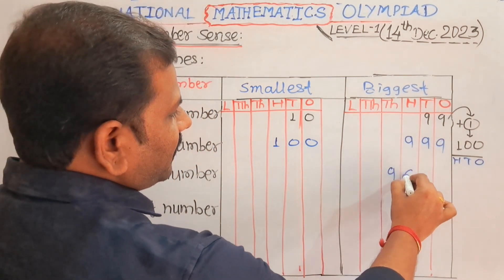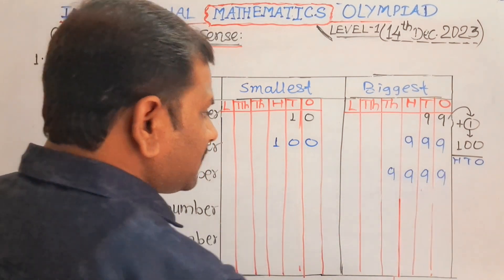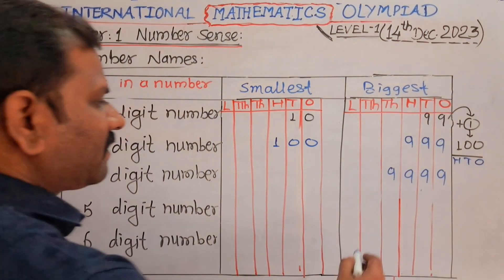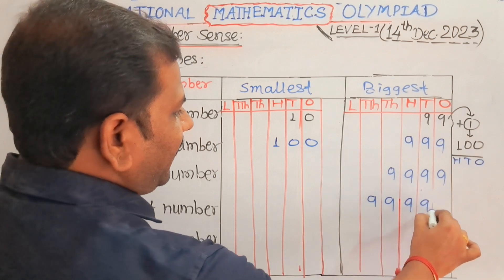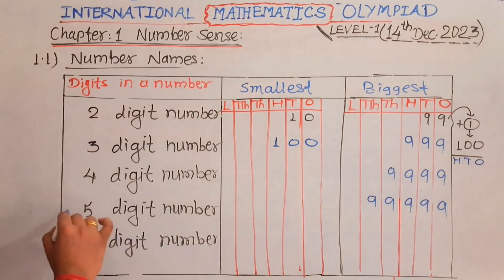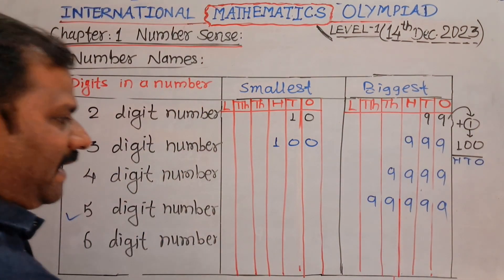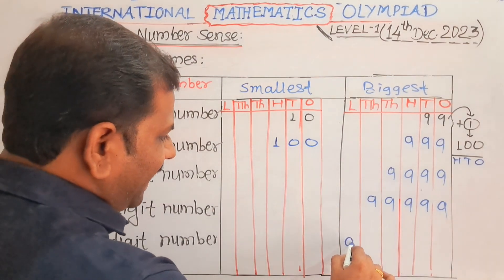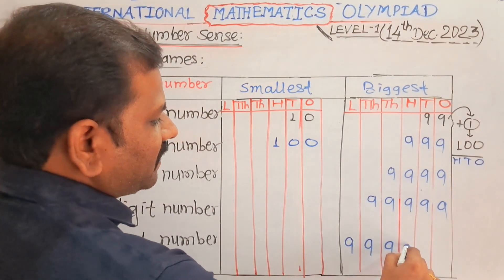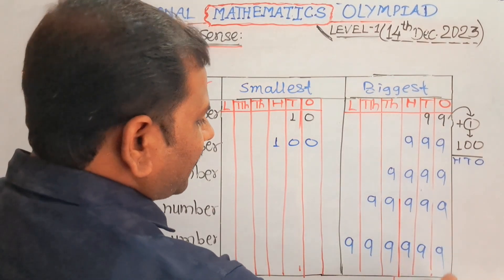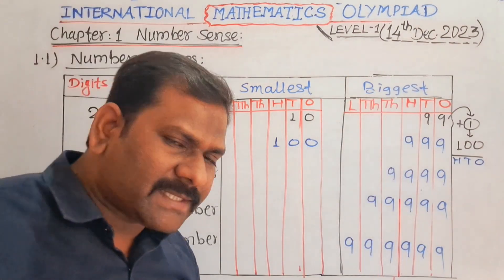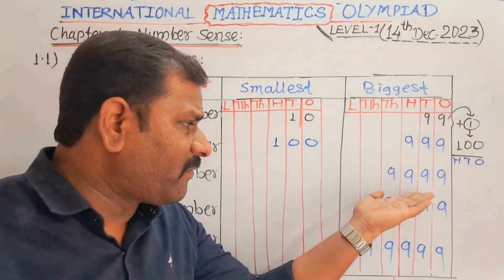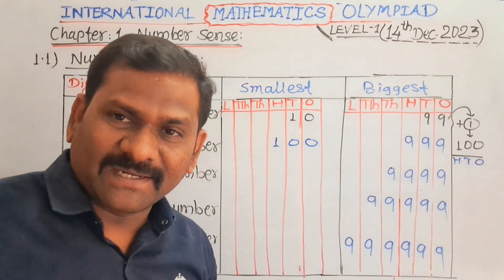9,999 is the biggest four-digit number. 99,999 is the biggest five-digit number. And 9,99,999 is the biggest six-digit number. So this covers the biggest two-digit, three-digit, four-digit, five-digit, and six-digit numbers.